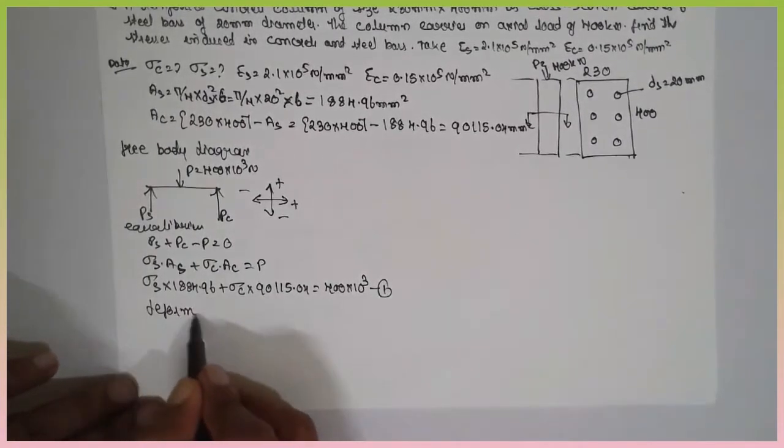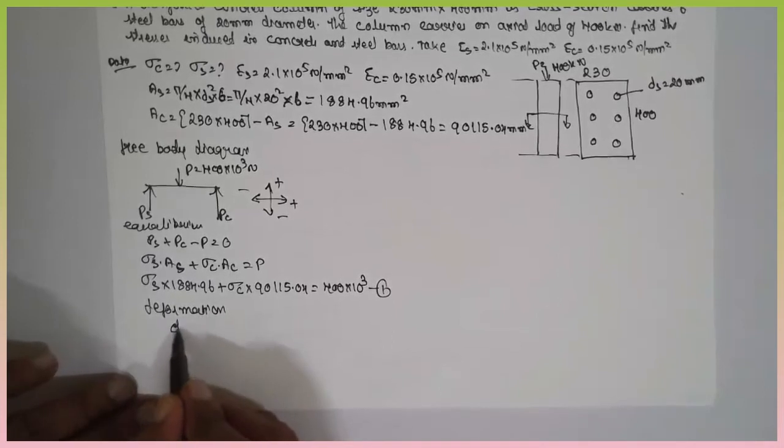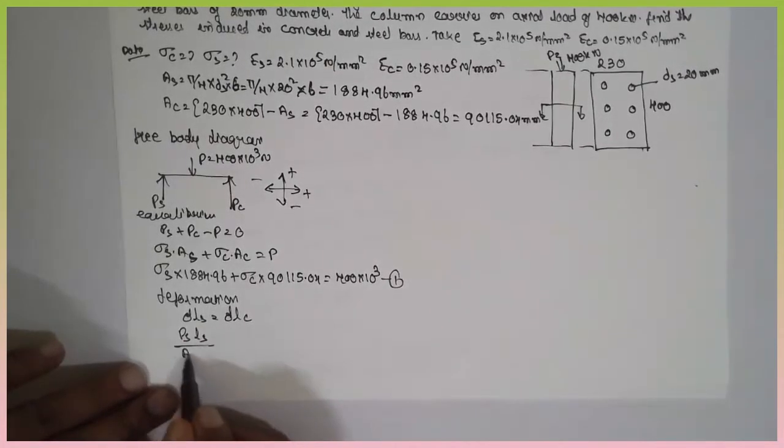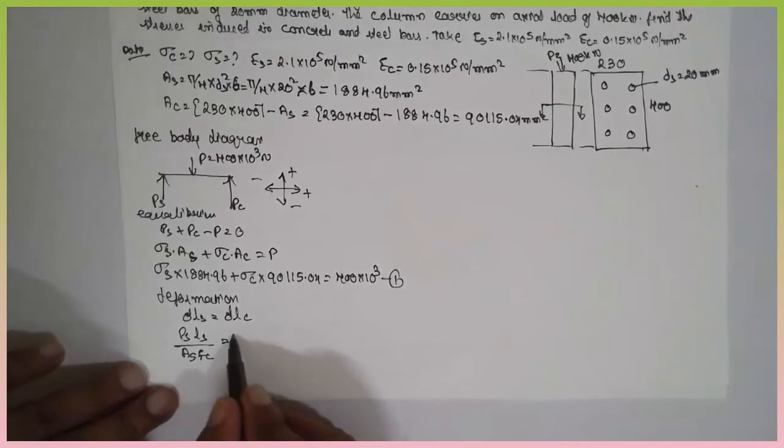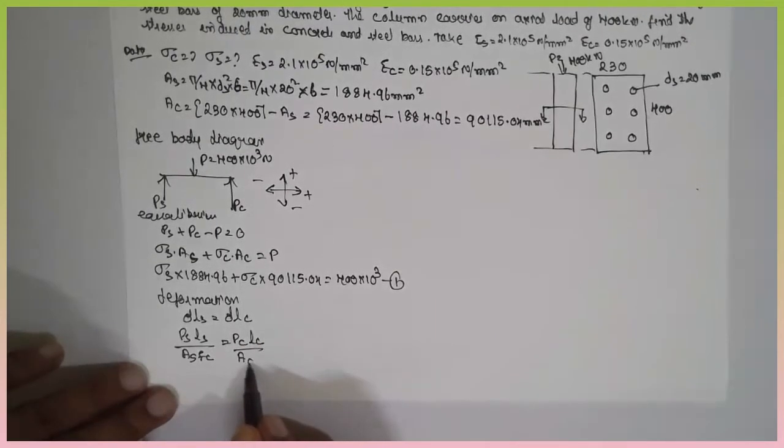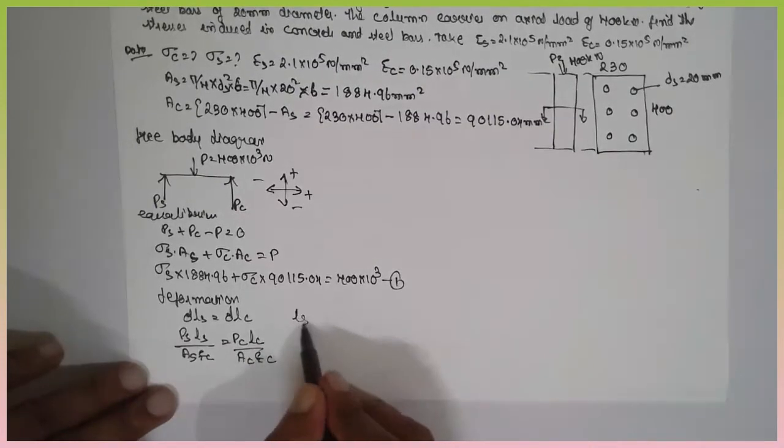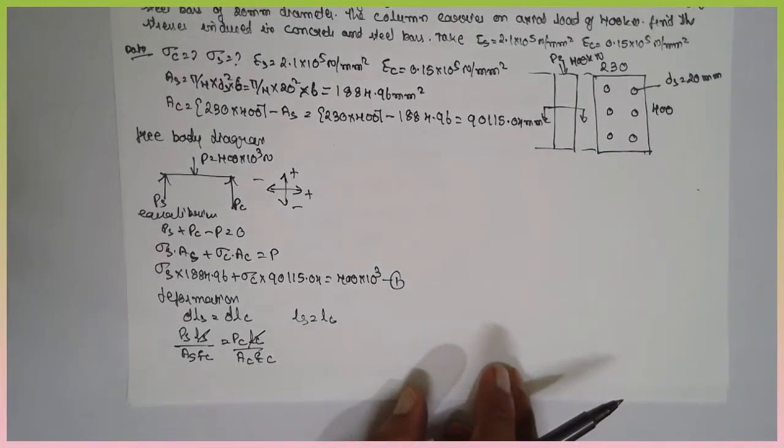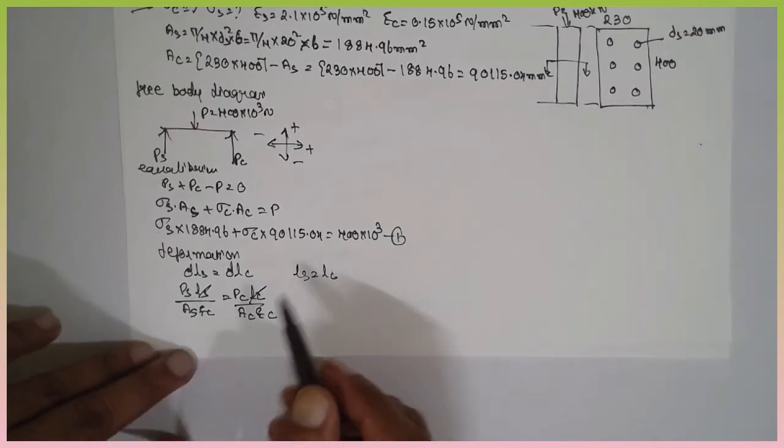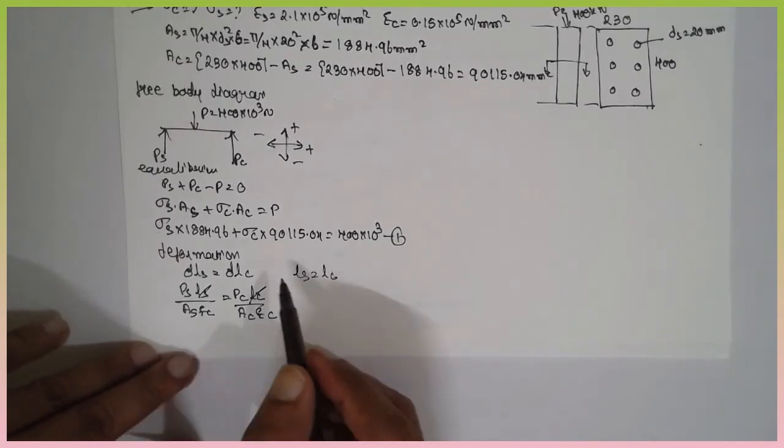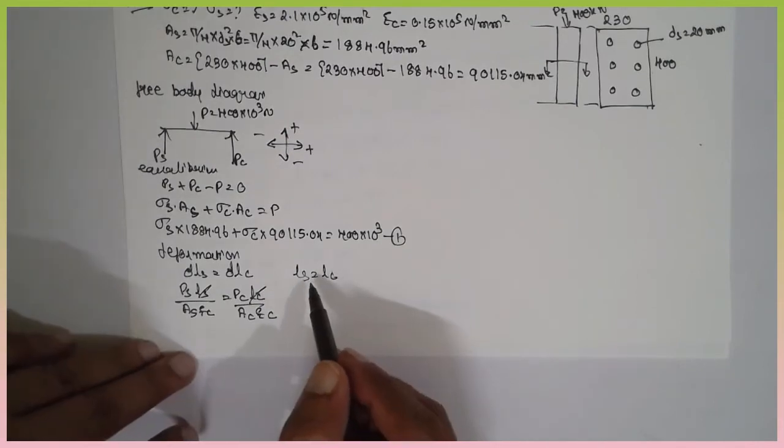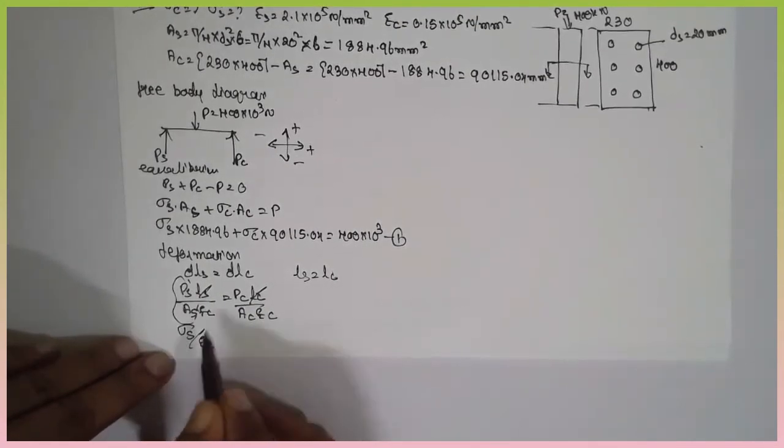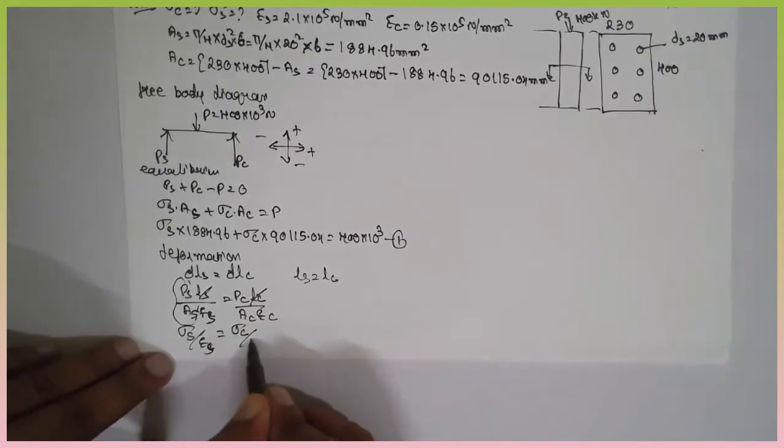Deformation. Deformation in the concrete or steel are equal. Delta ls is equal to delta lc. PS ls divided by as es is equal to pc lc divided by ac ec. LS and lc are equal. This and this get cancelled. If they are not mentioned it, you have to make it equal. In common sense, the concrete length of the steel and concrete are equal. And this part is nothing but sigma s divided by es is equal to sigma c divided by ec.